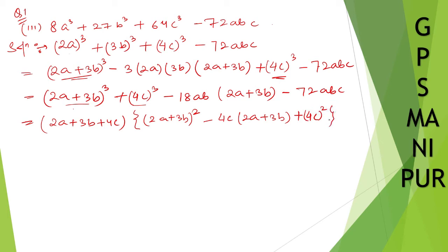So, put the bracket. Now, from this second one take 18ab common. So, minus 18ab common. What is left out is 2a plus 3b.